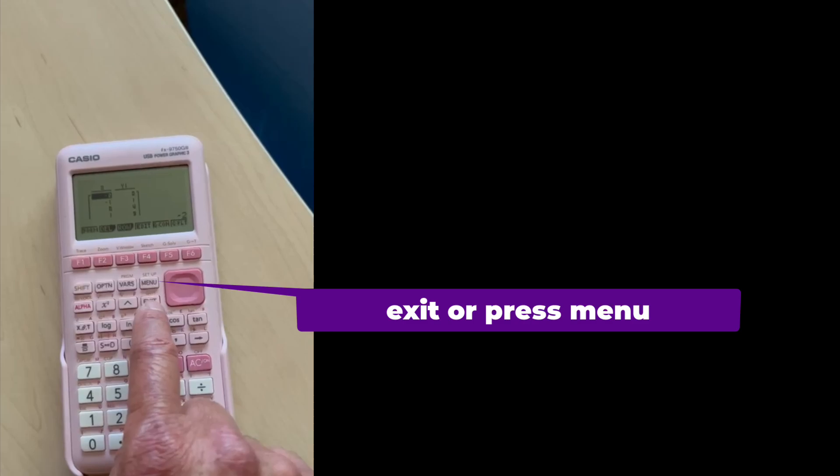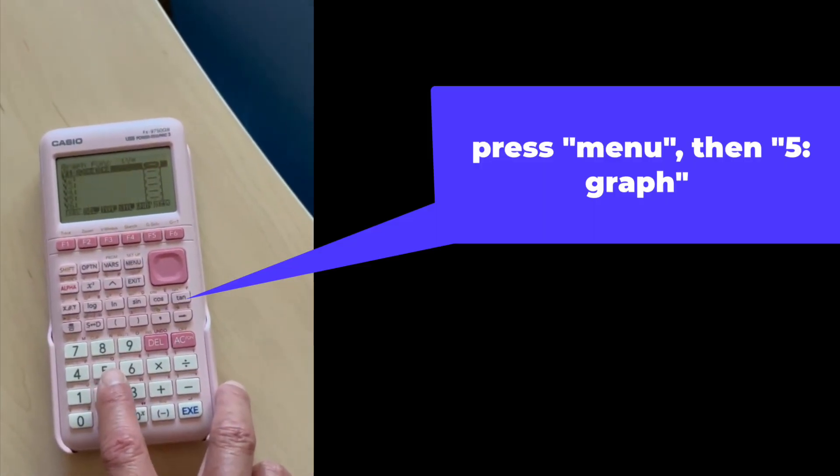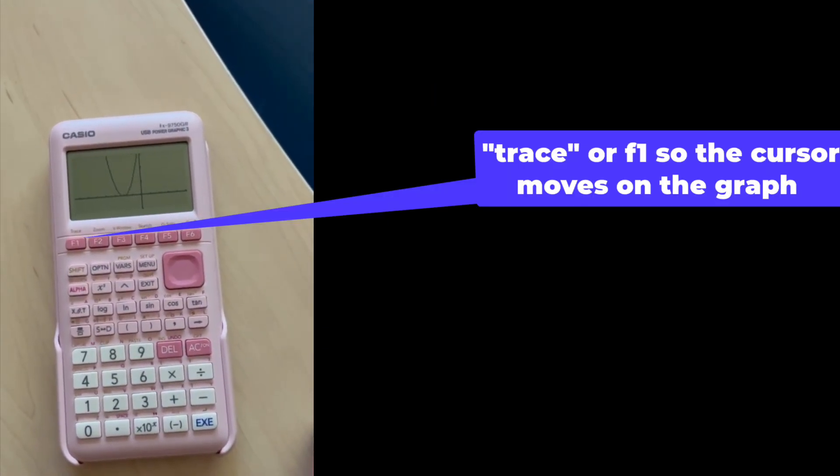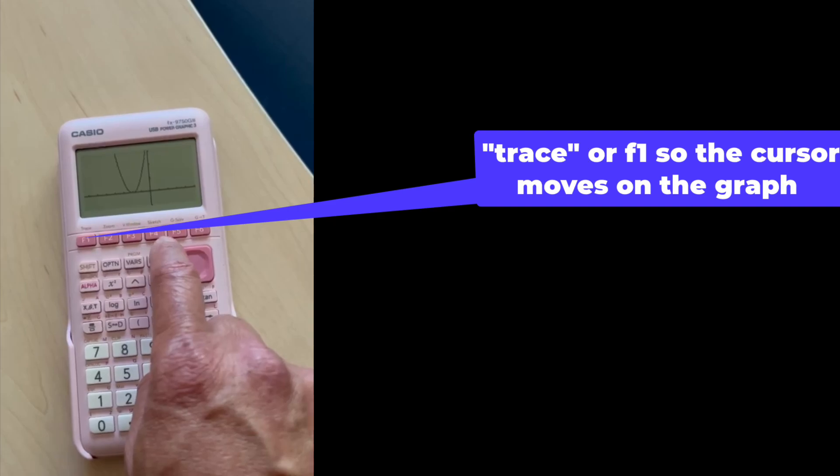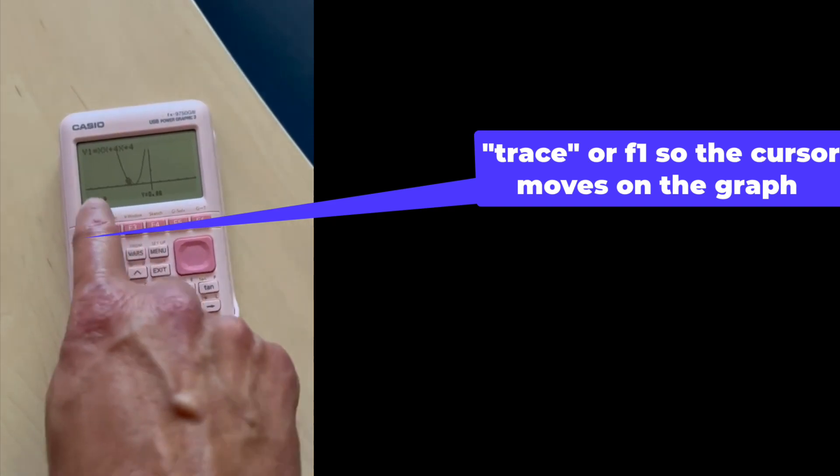So if you ever want a graph, go ahead. Exit, press menu. Number 5. Draw. And now you have a graph. You can press this button, trace. And you press left or right. And it's telling you values. You see how it moves?